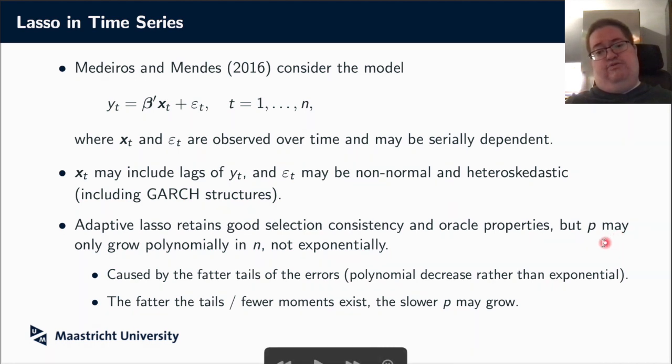So that also means that if you have these epsilons, which are not these nice normally distributed, whenever they have a t distribution with just a few degrees of freedom, then you would not want to use, if you have just 50 observations, you would not want to make p equal to a thousand. Instead, you would want to make p somewhat, allow it to be somewhat similar to n, but not that much larger. And of course, it depends on how fat the tails are. So how few moments exist, how slow or fast p may grow.